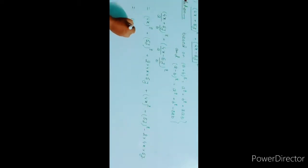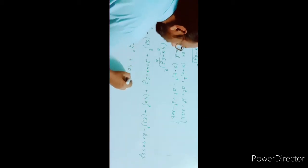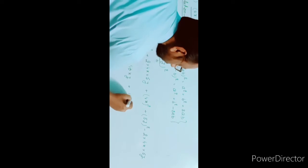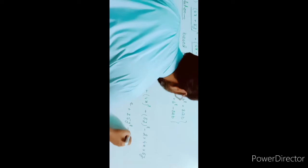Expanding: 16x² + 25y² + 40xy, plus 16x² + 25y² - 40xy. The +40xy and -40xy cancel. We have 16x² + 16x² = 32x², and 25y² + 25y² = 50y². So the answer is 32x² + 50y².